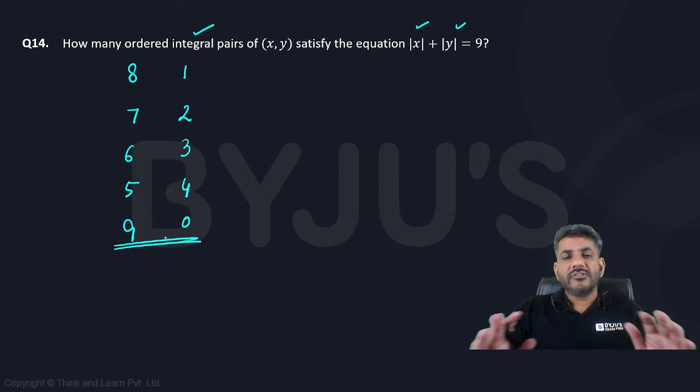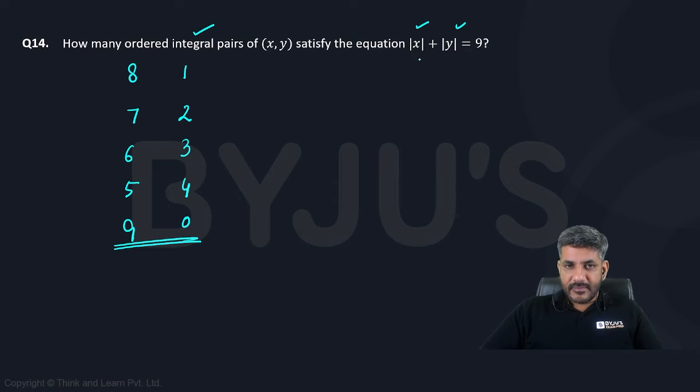Can I say these are the only possibilities? But when I talk about 8 and 1, they can be 8 and 1, even -8 and 1 because mod of -8 is 8, 8 + 1 is 9, even 8 and -1, even -8 and -1. In all four cases, you will get a sum of 9.